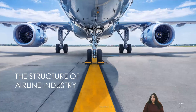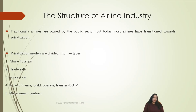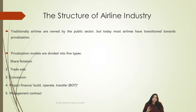Now let's move on to study the structure of the airline industry. Traditionally, airlines are owned by the public sector. But today most airlines have transitioned towards privatization. There are basically five types of privatization models: one — share flotation; two — trade sale; three — concession; four — project finance (also called BOT: build, operate, transfer); and five — management contract. These are the five models of how privatization takes place.